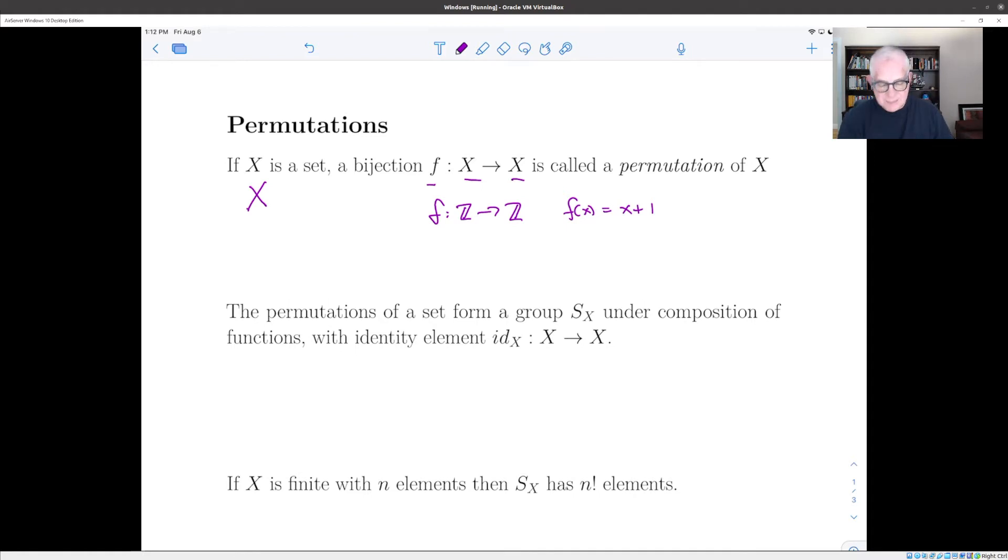And alternatively, if our set X has two elements, let's say the elements one and two, then the function f which takes one to two and two to one is a permutation of that set.